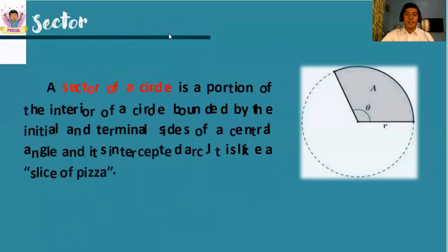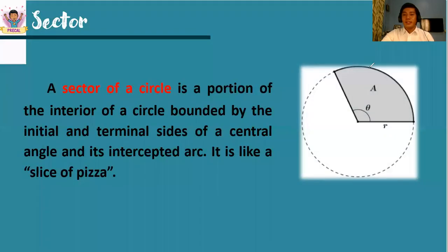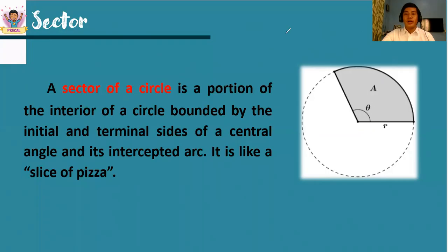Let's have another concept. Aside from the arc length, the given central angle also encompasses a shaded area. Observe this shaded area here — the gray part. The shaded area is what we call a sector of a circle. During your grade 10 mathematics, this was also discussed. Imagine getting a slice of pizza — it looks like that. So it is not related to the circumference; instead, it is now related to the area of a circle.